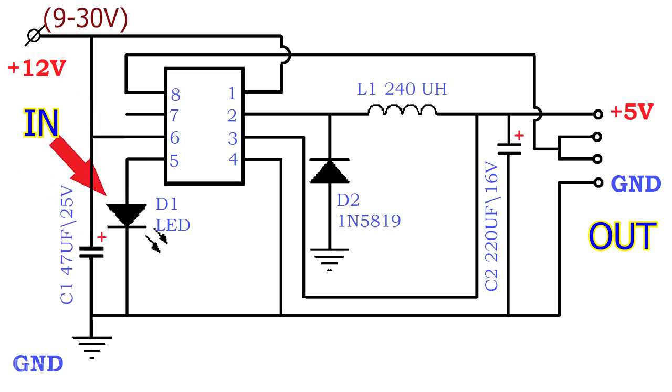D1 is the signal LED. At the output of the fifth leg, there is a voltage of about 3 volts. Therefore, you can put any LED at least 3 millimeters or 5. A quenching resistor is not required.